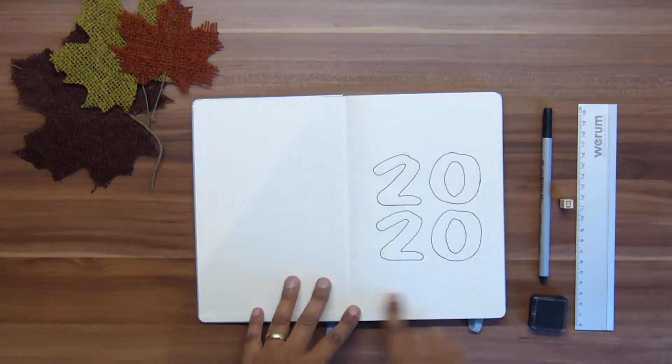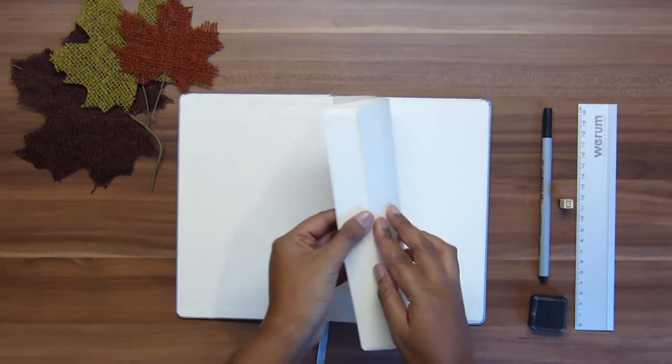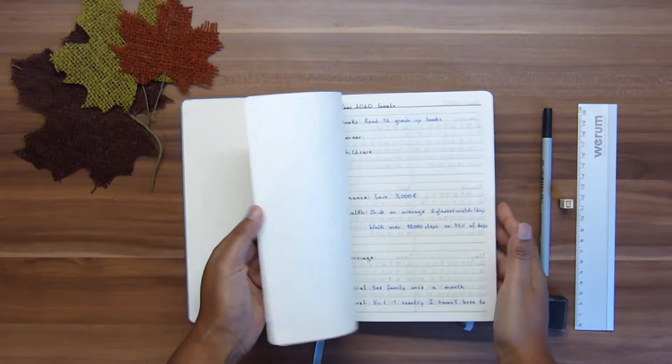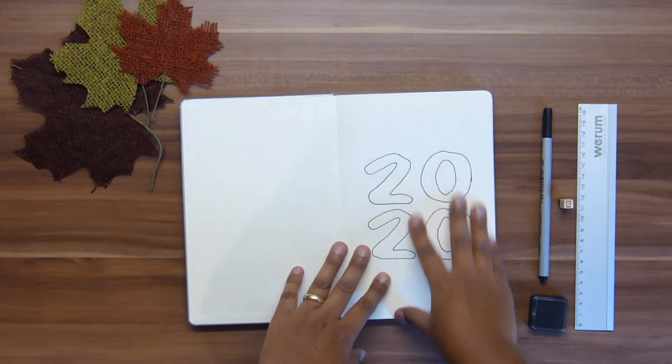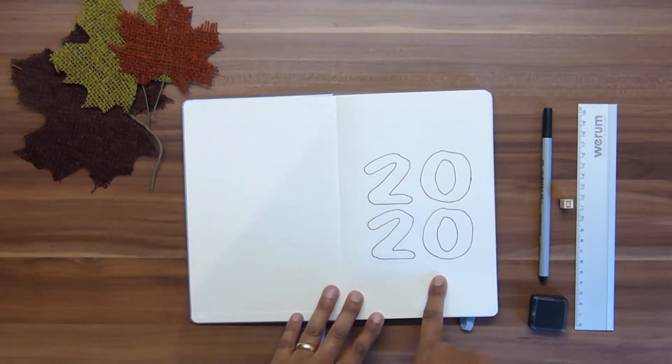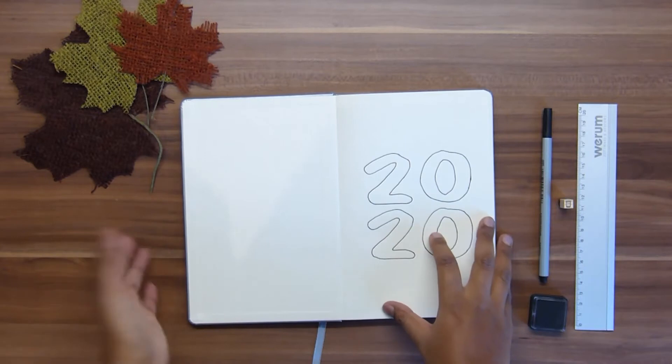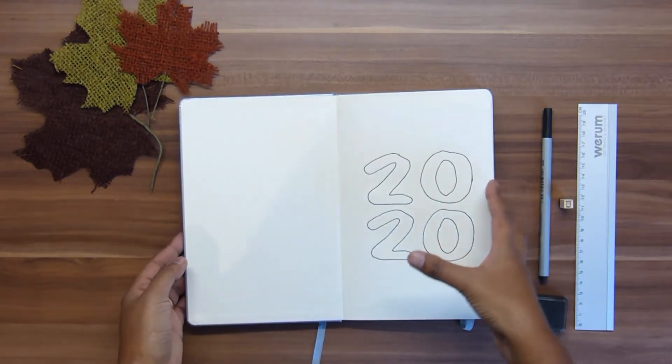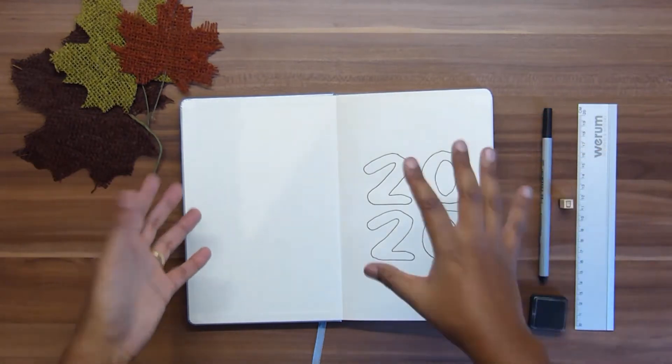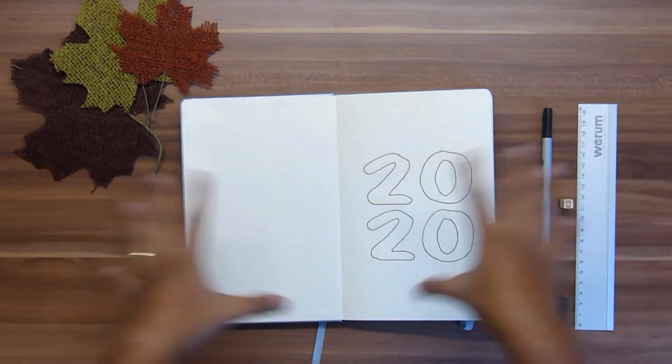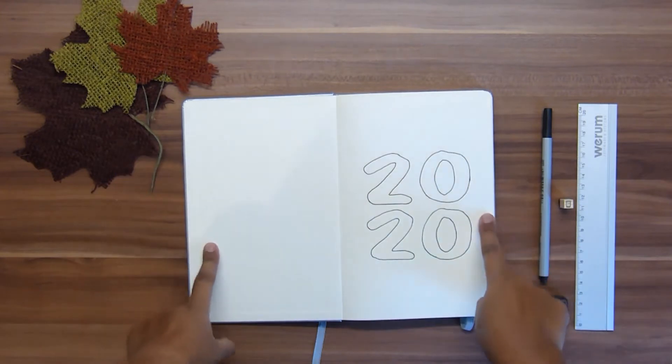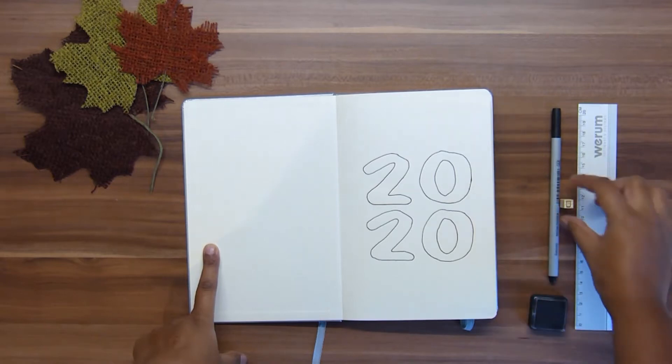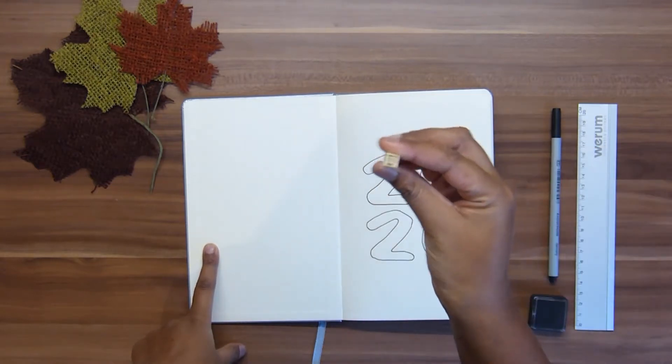This is an A5 format notebook with 160 lined pages. For the layout and pages that I want to incorporate for 2020, it is perfect. You can take whatever notebook you have and change the layout as you need. I will show you how I've made a planner out of this notebook just using a ruler, a black fineliner, and just this tiny stamp.